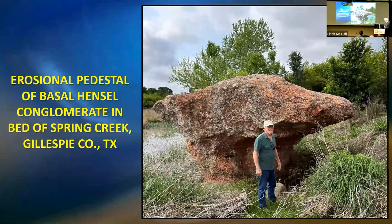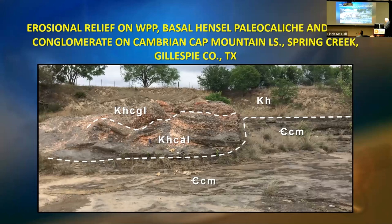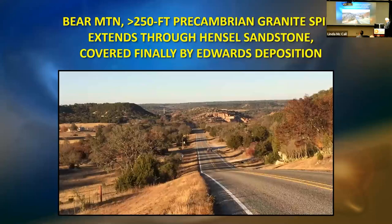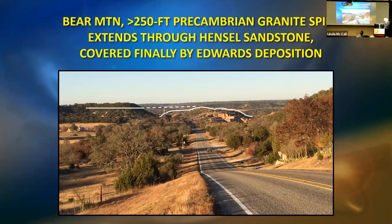Here we see a pedestal of Hensel arkosic conglomerate in the bed of Spring Creek west of Fredericksburg, and a head-on view of a Hensel slump of caliche and Cap Mountain slabs underlying red Hensel arkose cutting into flat-lying thin beds of Cambrian Cap Mountain Limestone. In the bed of Live Oak Creek west of Fredericksburg, Hensel arkosic conglomerate lies directly on flat-lying Cap Mountain Limestone beds; the unconformable boundary represents a hiatus of more than 400 million years. At Bear Mountain, six miles north of Fredericksburg, a pinnacle of Precambrian granite rises through about 275 feet of Hensel Sandstone and Glenrose Marl, all the way up to terminate at the base of the Edwards Limestone.